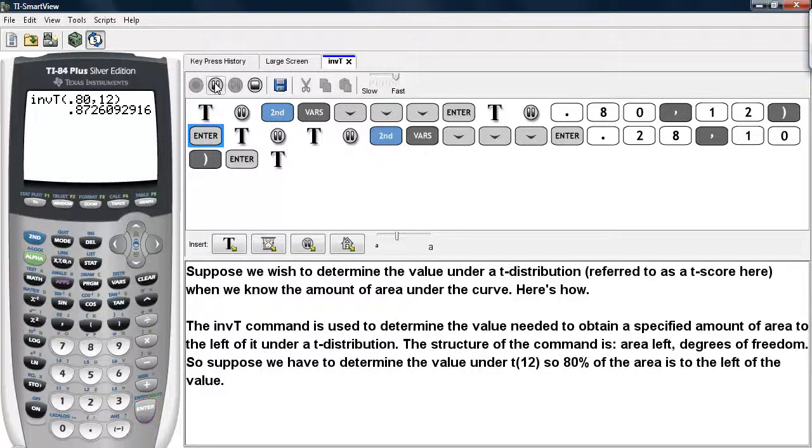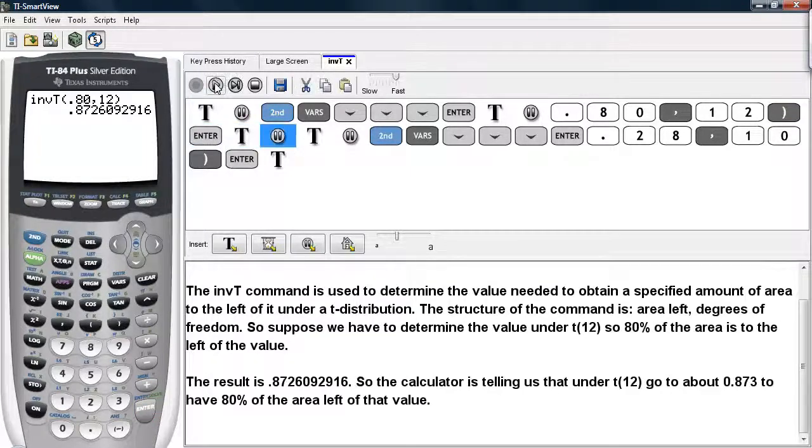And it says that under a t-distribution with 12 degrees of freedom, you go out to about 0.873, and when you go out to about 0.873, you will have 80% of the area to the left of that value.